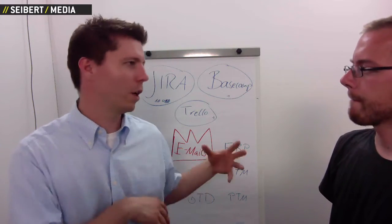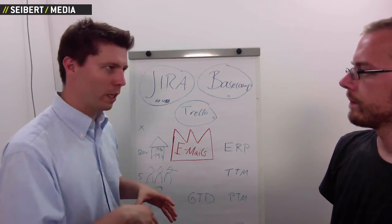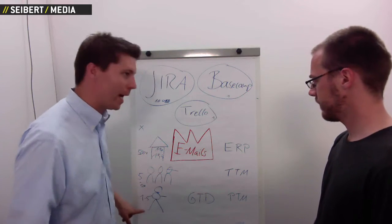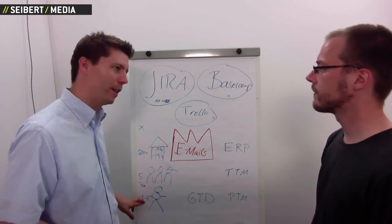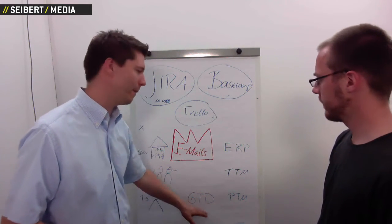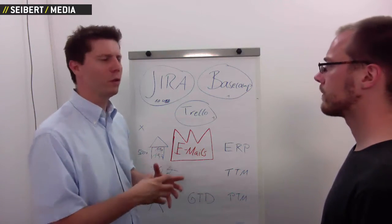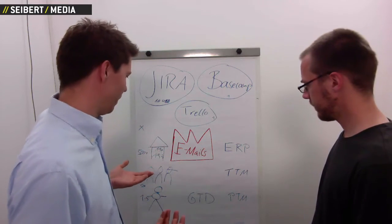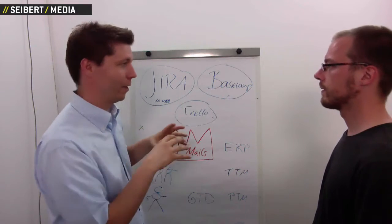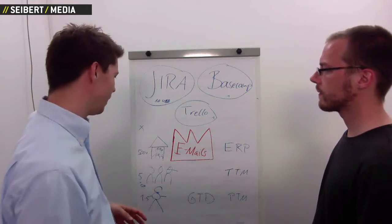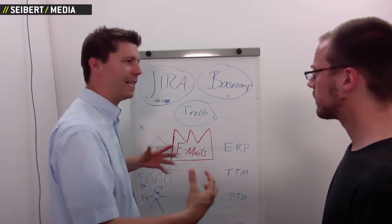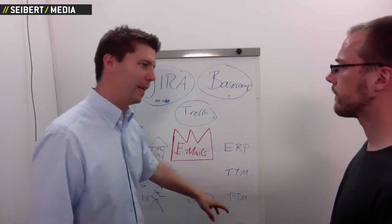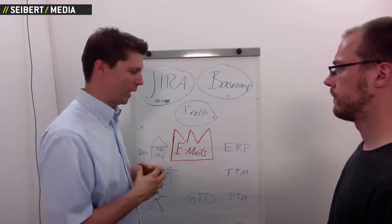If someone asked me on the street why they should use Trello or Basecamp instead of Jira, I'd explain it like this: for one person or a small team of up to five, the basic goal is to get things done and stay productive without tasks falling through the cracks. They trust themselves to manage their work — they don't need heavily controlled transitions between tasks. It should be fast, lightweight, and not get in the way. This is what I call personal task management.